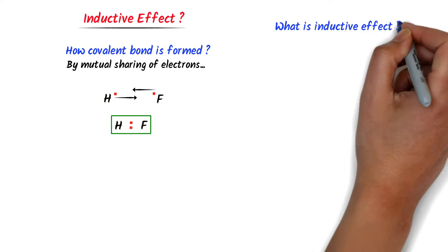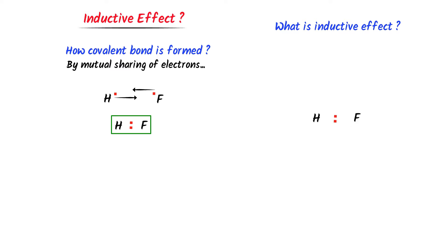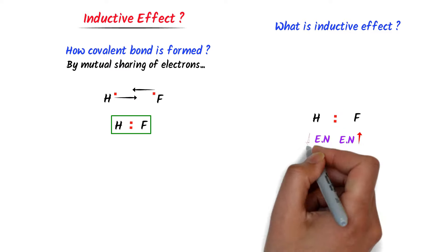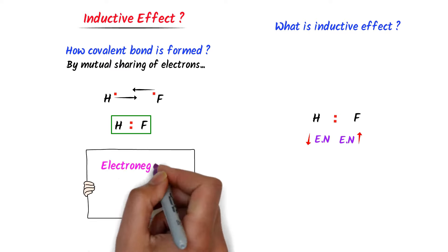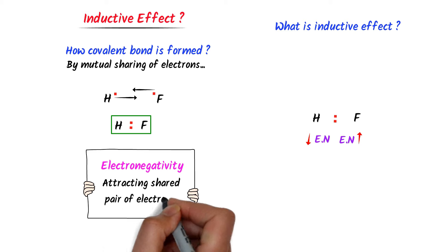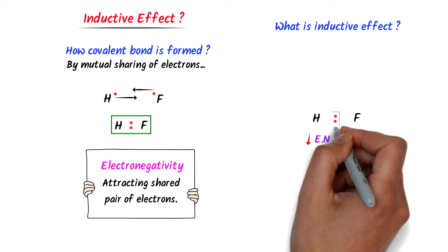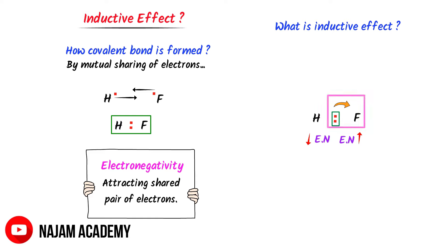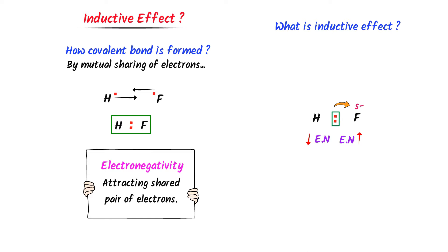Now, what is inductive effect? Consider this covalent bond between hydrogen and fluorine. This is the shared pair of electrons between these two atoms. Fluorine is more electronegative and hydrogen is less electronegative. Remember that electronegative means attracting the shared pair of electrons. Here, fluorine attracts this shared pair of electrons toward itself because it is more electronegative. As a result, the electronic cloud tilts more towards fluorine than hydrogen, so a partially negative charge appears on fluorine and a partially positive charge appears on hydrogen.